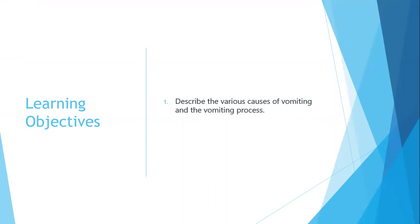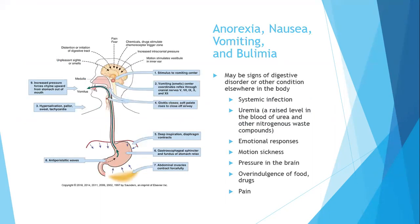We'll talk about the various causes of vomiting and the vomiting process, as well as nausea and diarrhea. Anorexia, nausea, vomiting, and bulimia can all be signs of a digestive system disorder or another condition elsewhere in the body. For example, nausea and vomiting can be caused by motion sickness from your vestibular system, or by systemic infection.